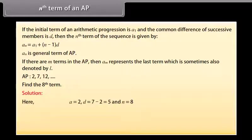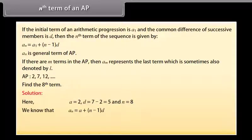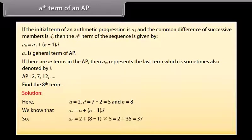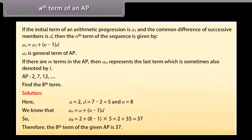Here a = 2, d = 7 - 2 = 5, and n = 8. We know that a(n) = a + (n-1)×d. So a8 = 2 + (8-1)×5 = 2 + 35 = 37. Therefore, the 8th term of the given AP is 37.